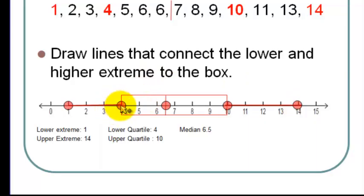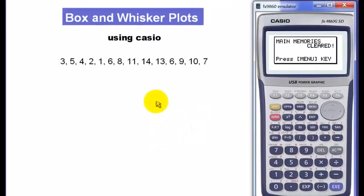The lower quartile is equal to 4, and then the upper quartile was equal to 10, and the median is equal to 6.5. Note that we have two middle numbers here. That's why we took the average to get the median, which is 6.5. Alright, now we are going to use our Casio to graph the box and whisker plots of the same data.